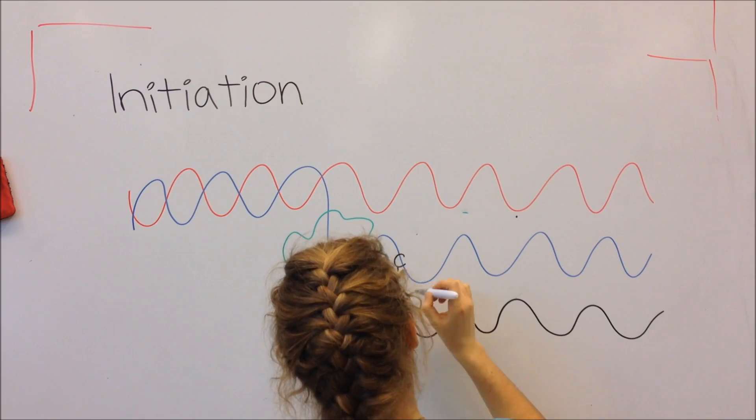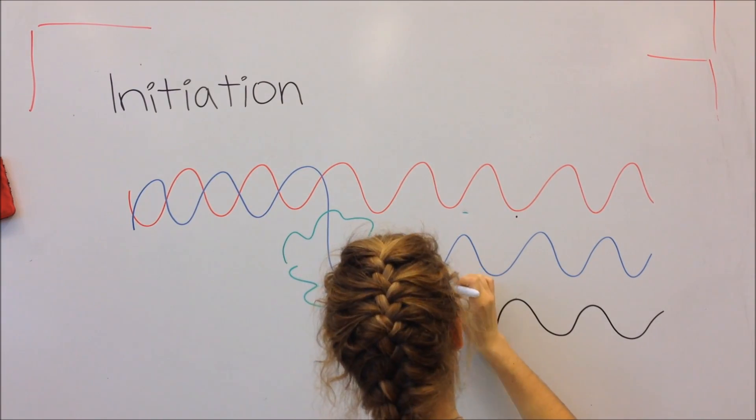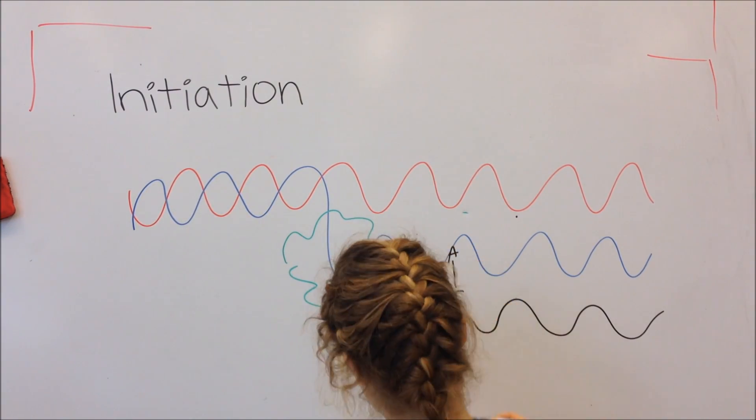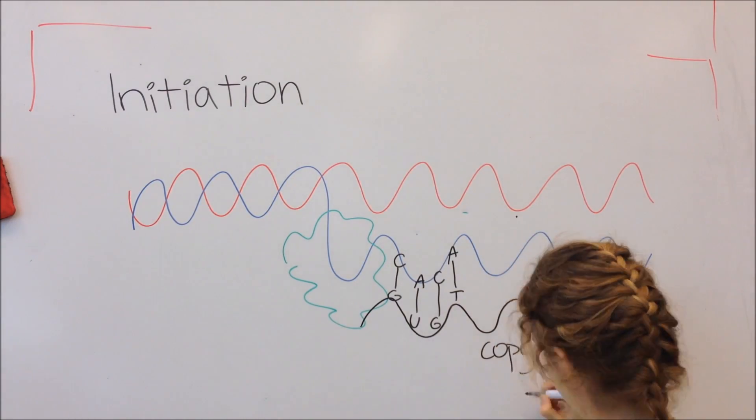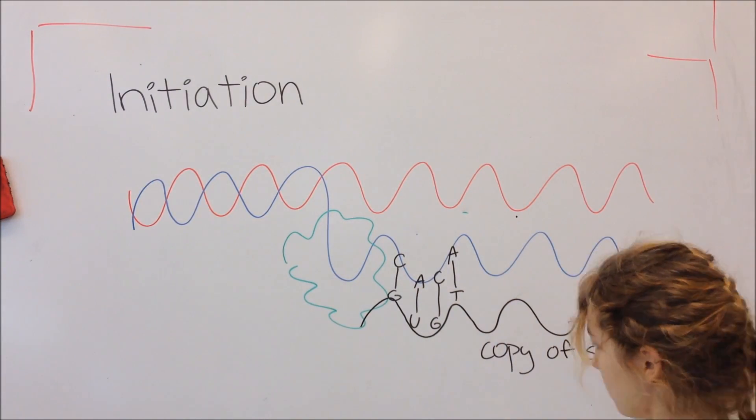During this phase, DNA also zips open to let the polymerase enter. RNA is created by attaching bases to the complementary base of the DNA antisense strand.